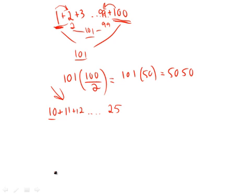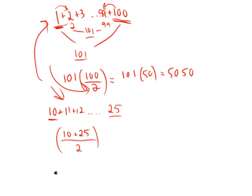So what we did is we took the first and the last. In this case, 10 and 25. And we divided by 2. So we're going to say 10 plus 25 divided by 2. Okay, so far so good.